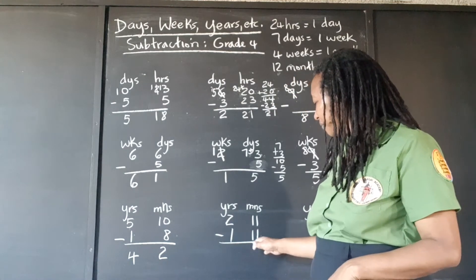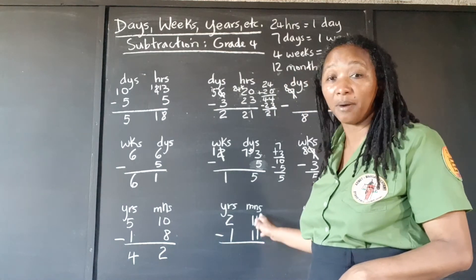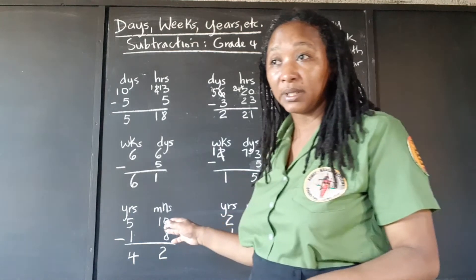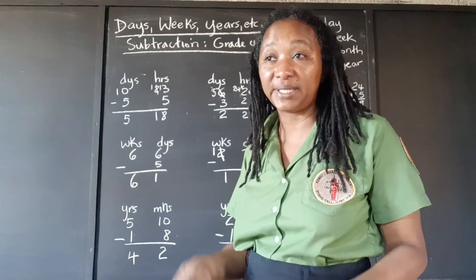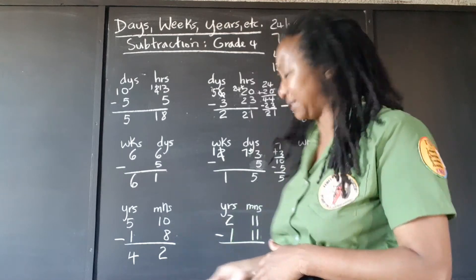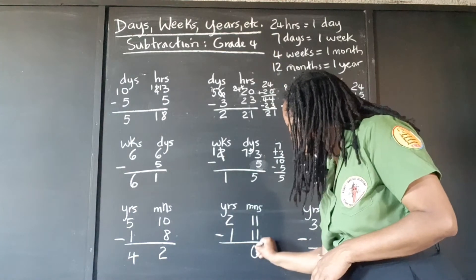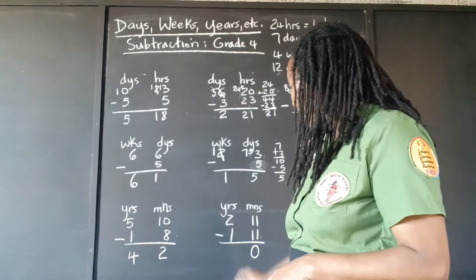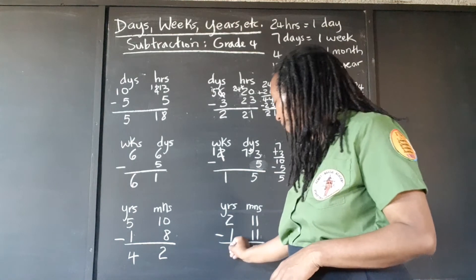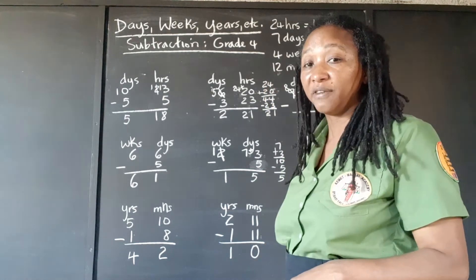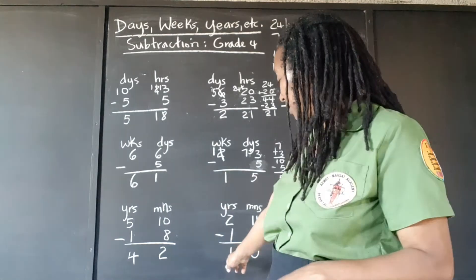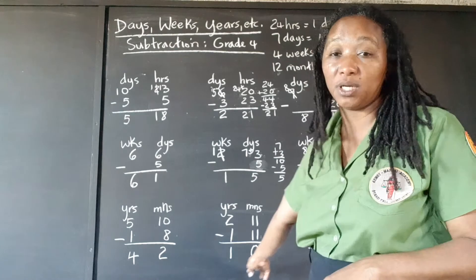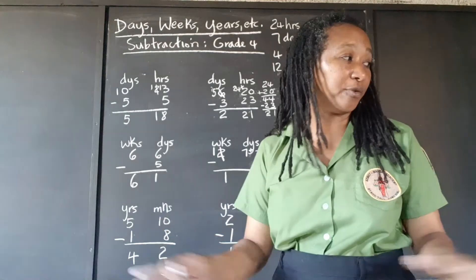Here we're taking 11 months from 11 months. Can we do that? Yes — so we're left with zero months. And 2 years take away 1 year is 1. So the final answer for this one is 1 year and no months, just 1 full year.